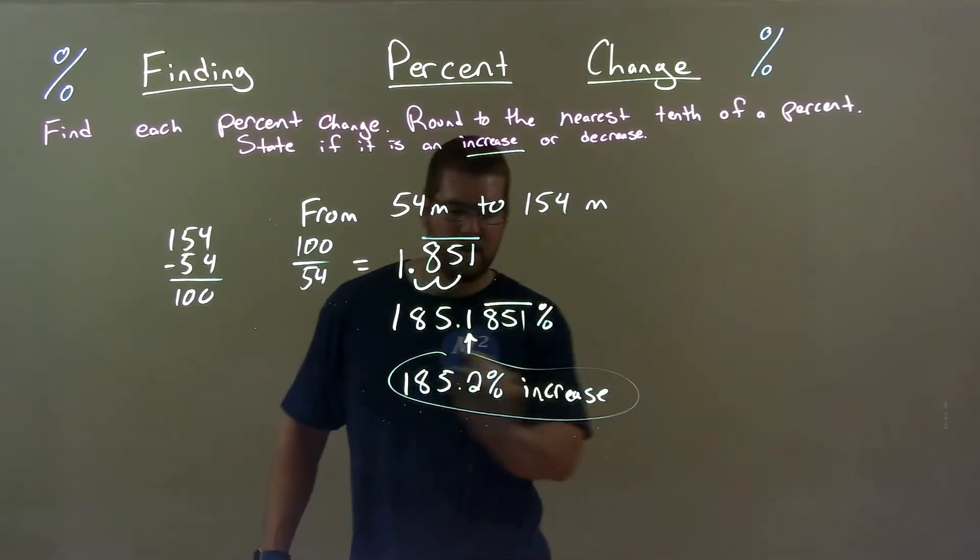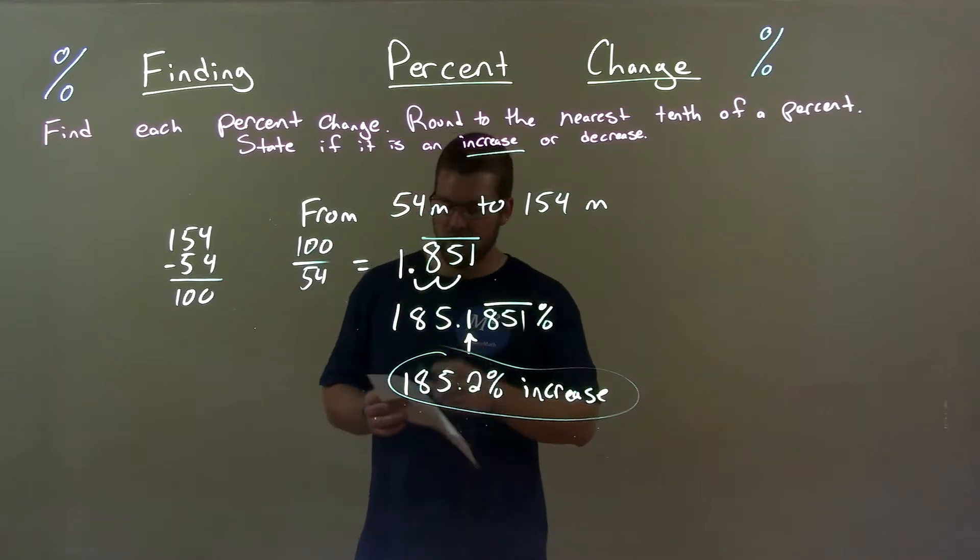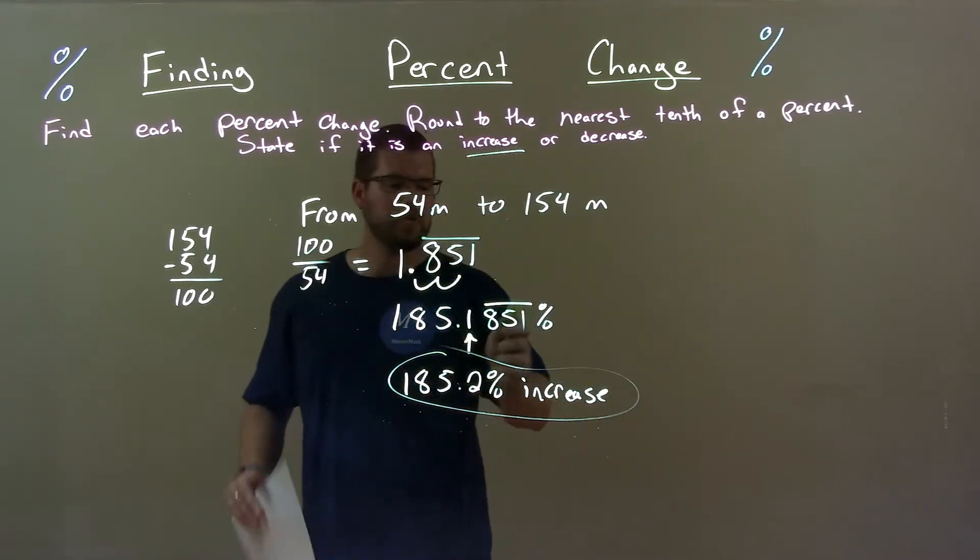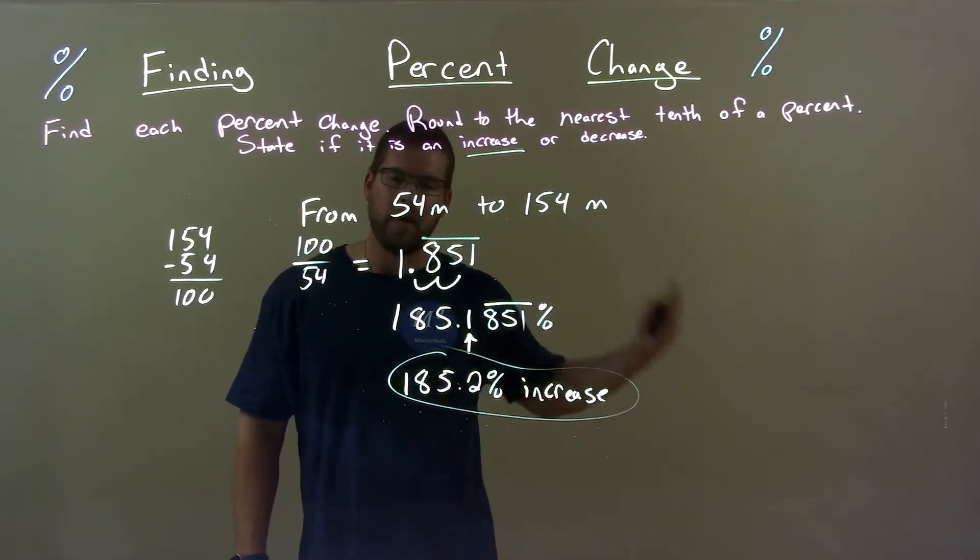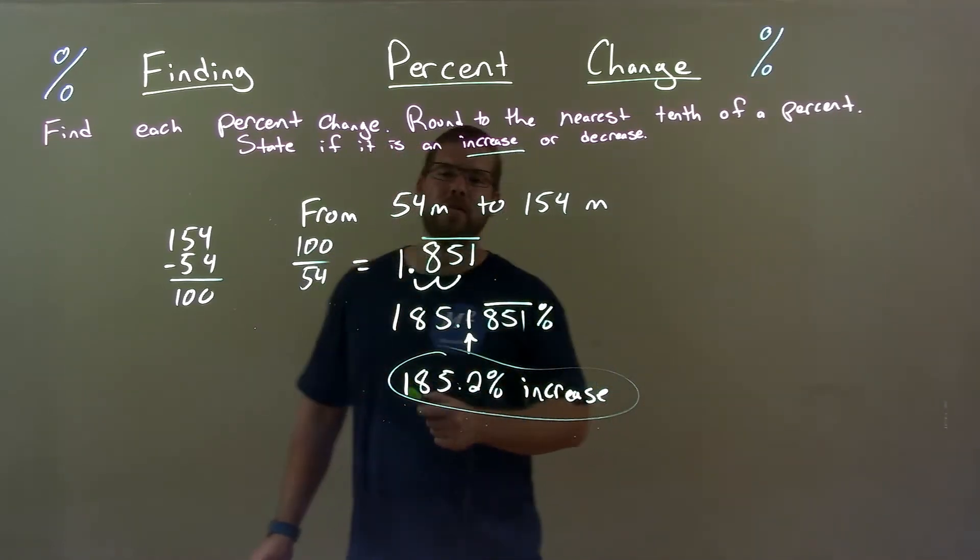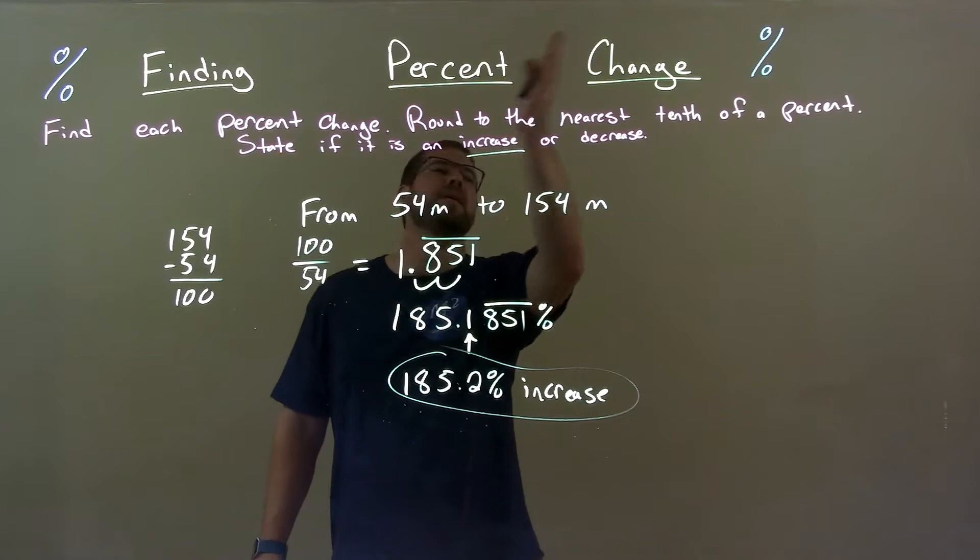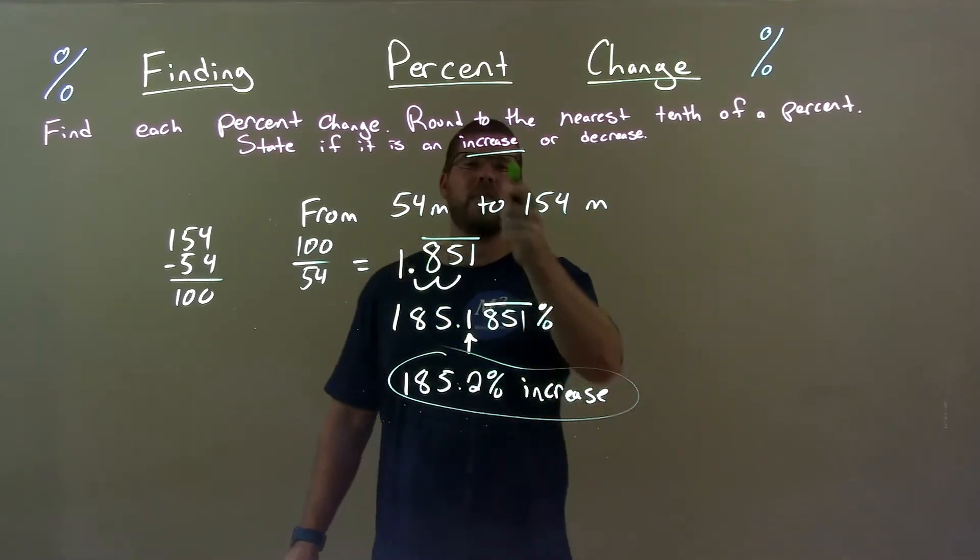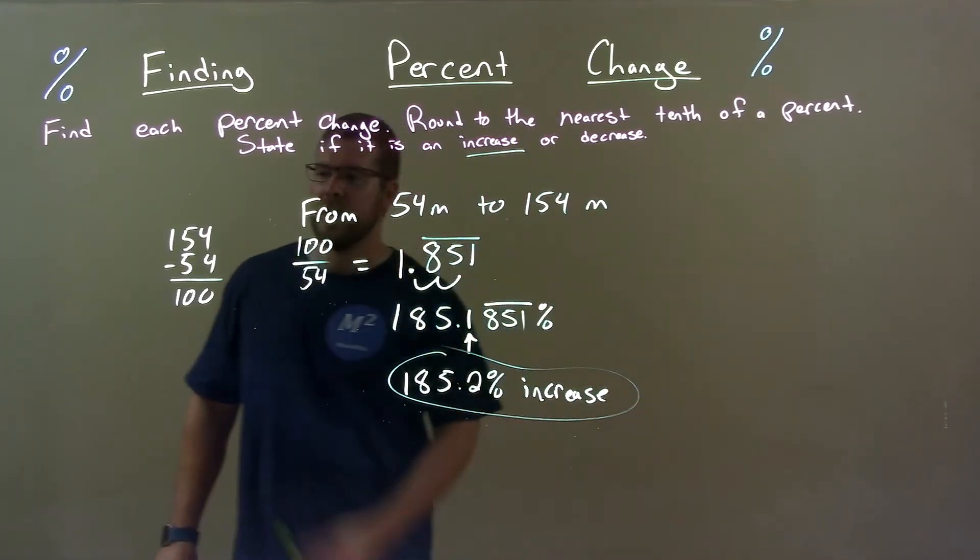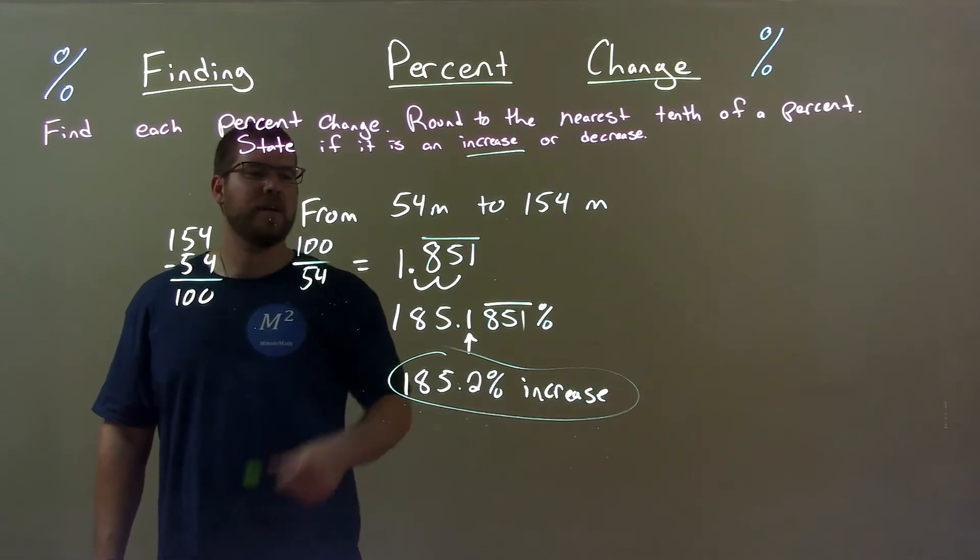And so there we have our final answer: 185.2 percent increase. Quick recap: we're given from 54 meters to 154 meters and we define the percent change. Well clearly that's an increase right there. Difference between the two numbers is 100, divided that by...